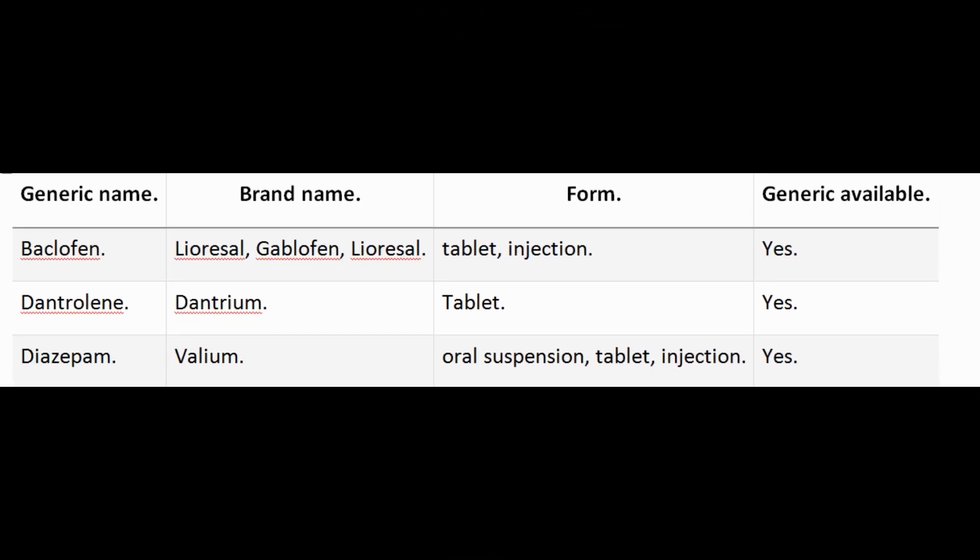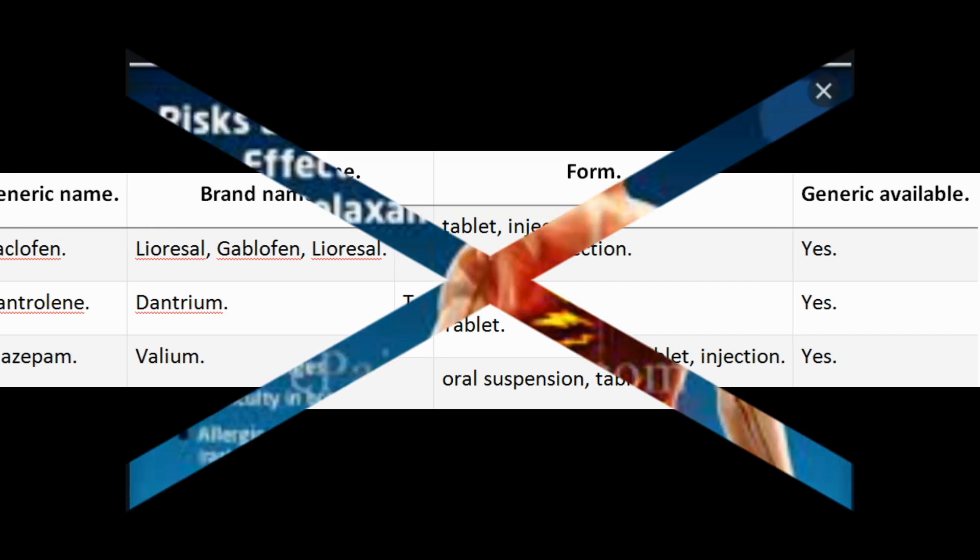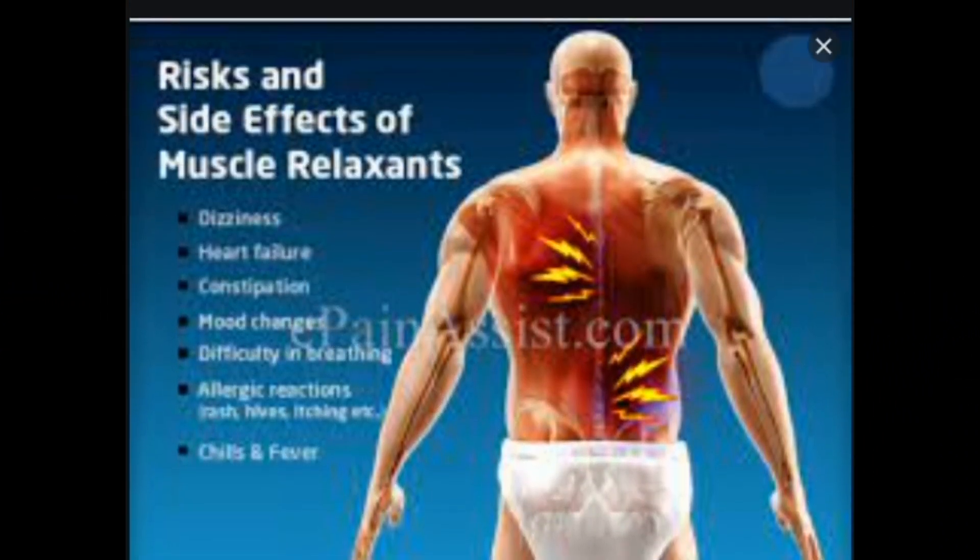List of antispastics — generic name, brand name, form, generic available: baclofen (Lioresal, Gablofen), tablet and injection, yes; dantrolene (Dantrium), tablet, yes; diazepam (Valium), oral suspension and tablet, yes.